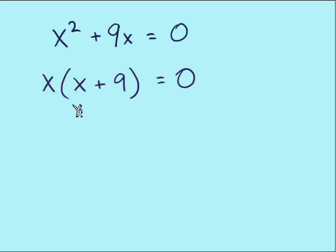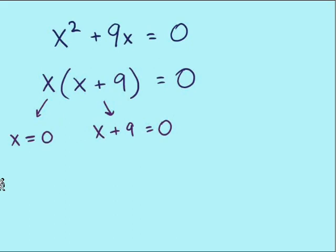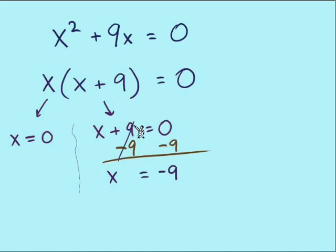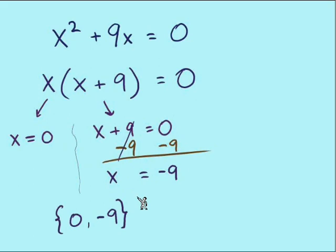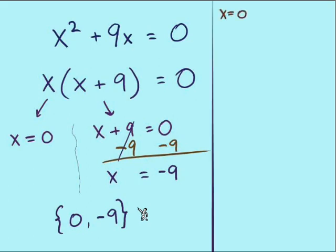Now that it's factored, we are looking at the parts multiplied together that we can split up into individual equations. We can see that x plus 9 is one part, giving us x plus 9 equals 0. The other part is just x, so x equals 0 is our first solution. For x plus 9 equals 0, we subtract 9 from each side, leaving us with x equals negative 9. So even with just a GCF factoring, we still find two solutions. Our solution set is {0, negative 9}.